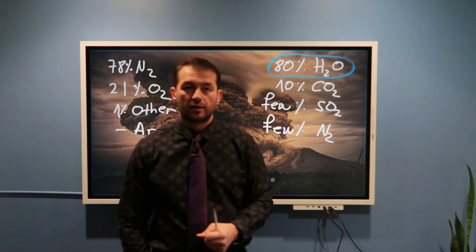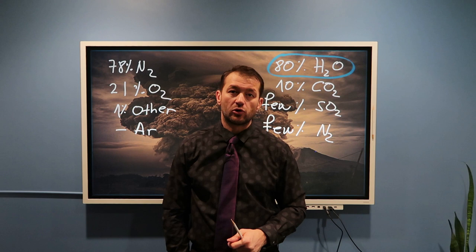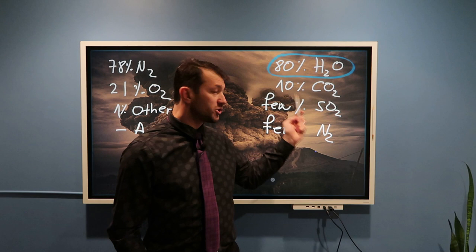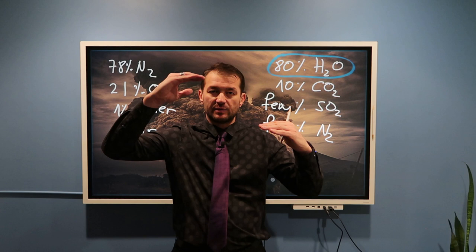Approximately 540 million years ago, we have the Cambrian explosion — the evolution of life on this planet. As that happened, we started having plants and organisms in the oceans consuming additional CO2. As you can see, the CO2 in our atmosphere was getting lower and lower as time progressed.